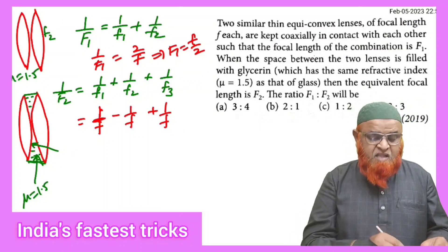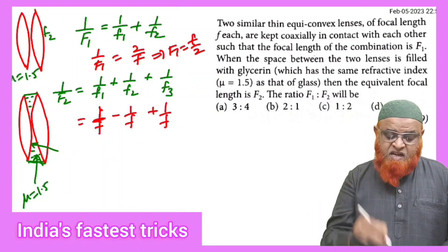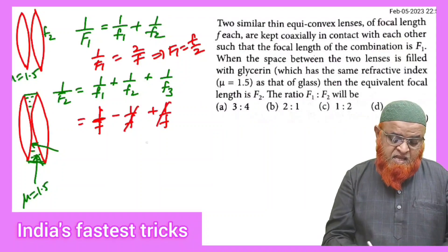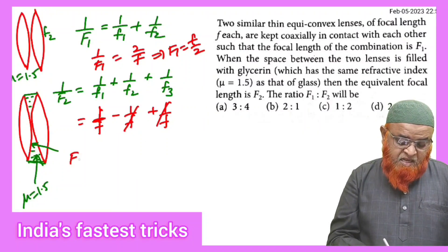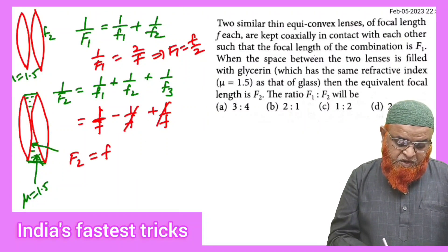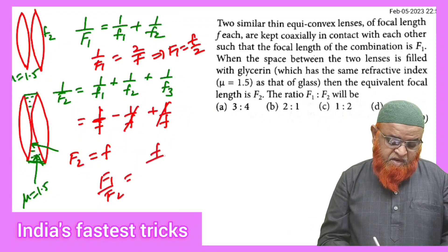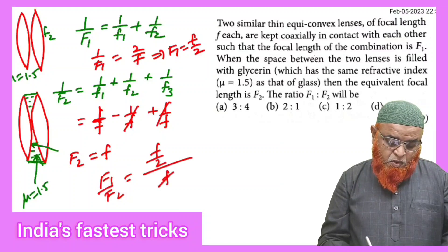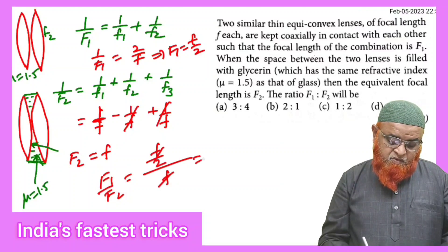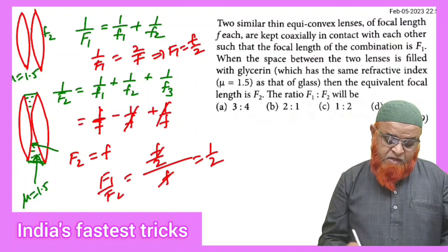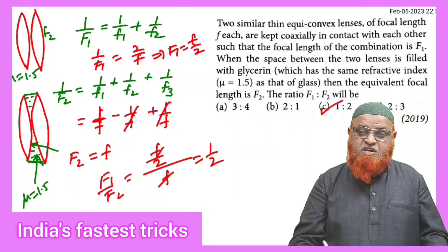These two terms get cancelled, therefore F2 is going to become f. Now F1/F2 can be taken as (f/2) divided by f. If you cancel out, it becomes 1/2. The third option is the correct answer for this problem.